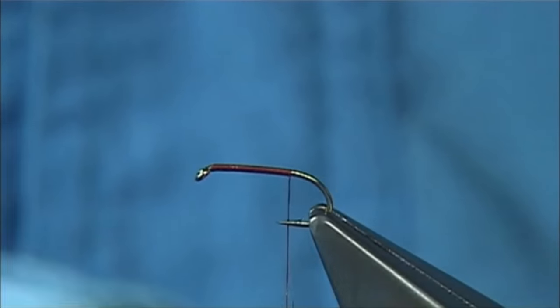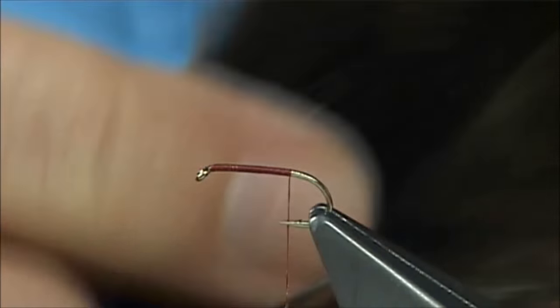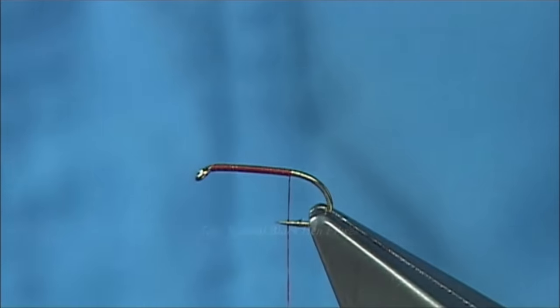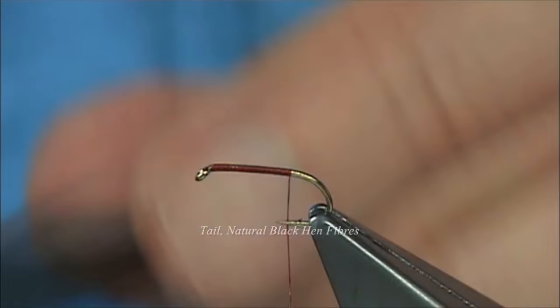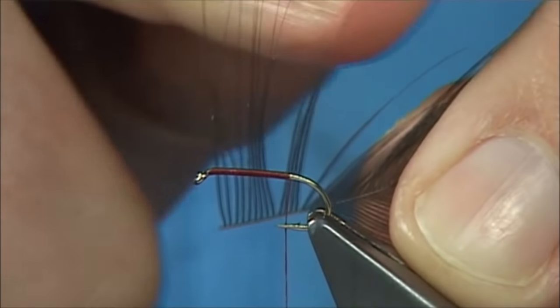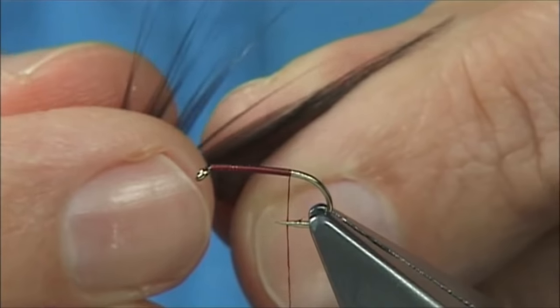Now the hen neck, as I said, I'm going to use the natural black hen and I'm going to use these bigger feathers up the top for the tail. So we need a few fibers now, just bring them 90 degrees from the stem, just like that and this will line up the tips, then we just remove them.